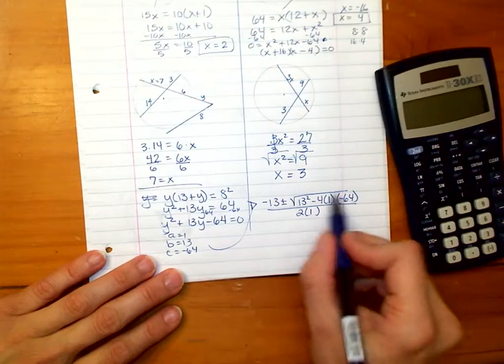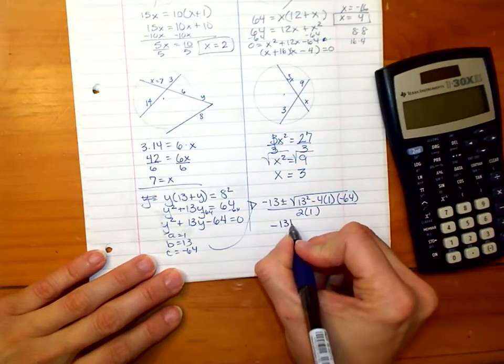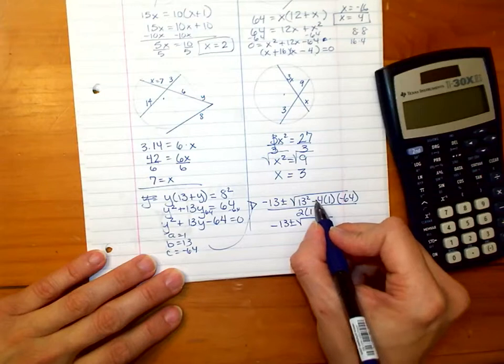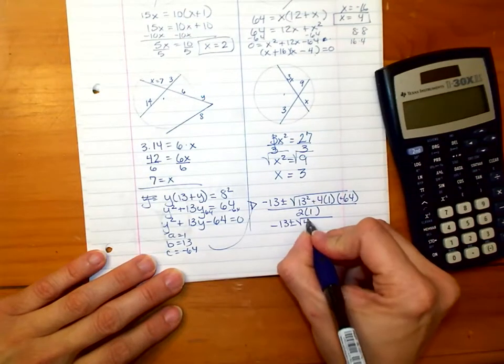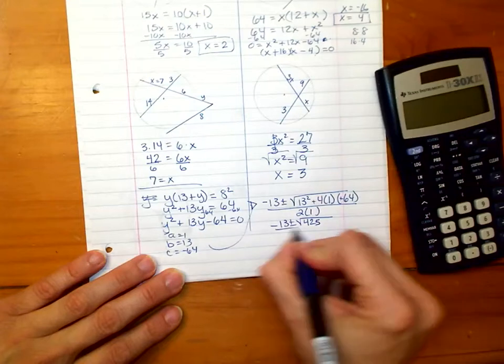Now you can simplify this in your calculator. I'll just do it quickly for you. Remember to use, the two negatives will cancel, and you multiply this and add it to that. You'll get 425. And 2 times 1 is 2.